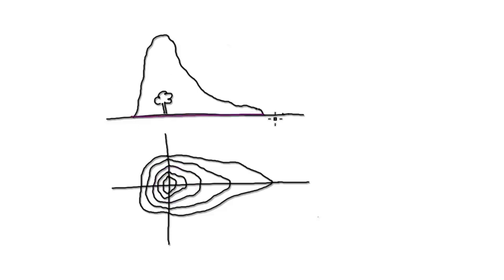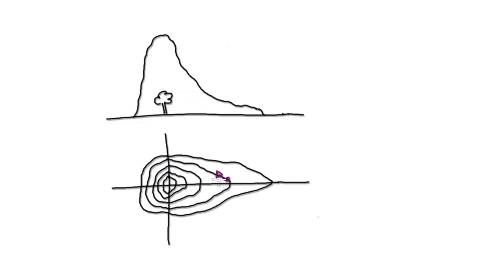At ground level that's this curve here. When the elevation is 100 meters, this curve corresponds to this one here. The point is: imagine you're an ant walking on this curve. You're not going to gain in elevation — your height will always stay the same at 100 meters. If you walk tangent to this curve all the time, you will never gain in height.